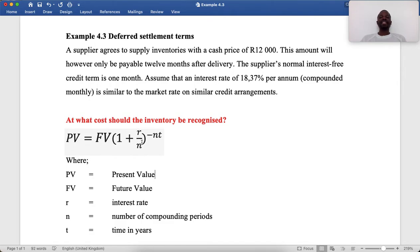PV equals FV bracket 1 plus R over N to the power minus NT. Where PV is present value, FV is future value, R is interest rate, N is number of compounding periods, T is time in years. Now let's work it out.